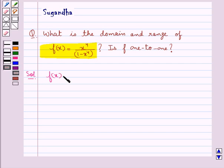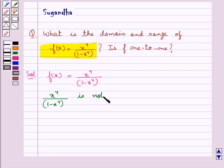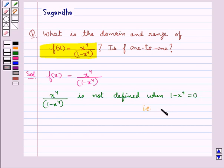We are given the function f(x) = x⁴ / (1 − x⁴). We can easily see that x⁴ / (1 − x⁴) is not defined when 1 − x⁴, that is the denominator, is equal to 0 — or when x = ±1. So when x = ±1, x⁴ / (1 − x⁴) is not defined.